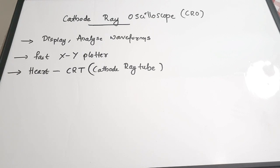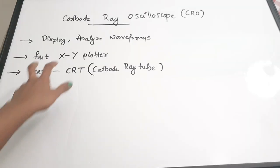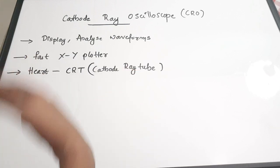The cathode ray oscilloscope is a very useful instrument used to display and analyze waveforms, signals, or phenomena. It is used in many areas including the medical field and radar for displaying waveforms. The CRO is actually a fast XY plotter with two axes — the X axis having time and the Y axis having voltage levels.